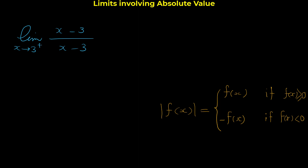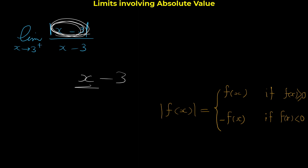Now that we've learned this technique, let's return to our question: the limit of |x-3|/(x-3) as x approaches 3 from the right. To start, we have to figure out whether the expression inside the absolute value, x-3, is positive or negative. In general, x-3 can be positive or negative depending on x, but this is a limit question.